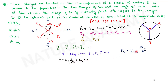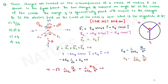Here E_Q equals 1 over 4π epsilon-naught times Q over R-squared, and E_q equals 1 over 4π epsilon-naught times q over R-squared. Substituting and solving: –sqrt(2) times Q plus q equals zero, giving Q equals q over sqrt(2). The answer is option A.